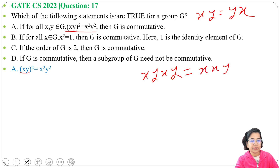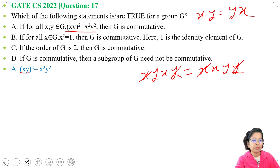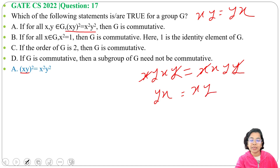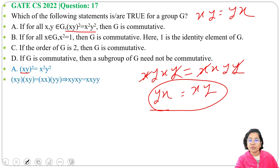We can cancel the x from the left side and cancel the y from the right side, giving us yx equals xy. Hence commutativity is satisfied, so Option A is true: if for all x, y in G, (xy)² equals x²y², then G is commutative — it is an abelian group.